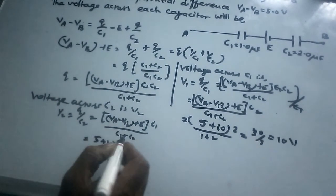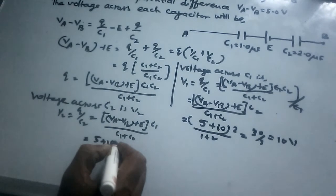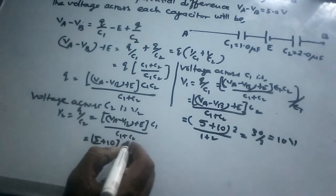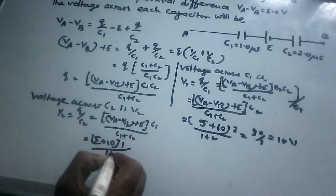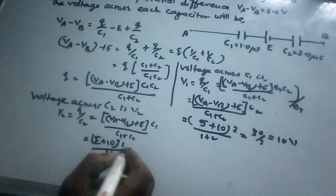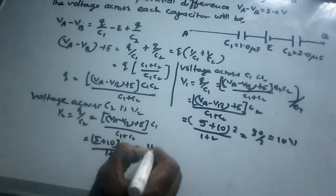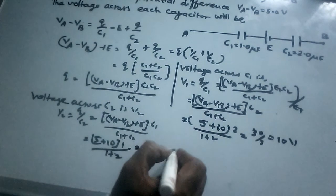5 plus 10, where VA minus VB is 5V and E is 10V, times C1 which is 1 mF, divided by 1 plus 2. So 15 divided by 3 equals 5 volts.